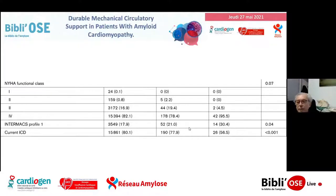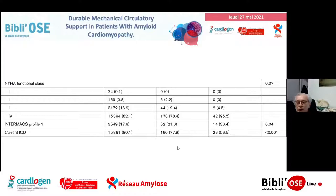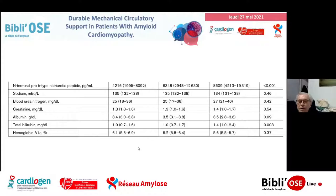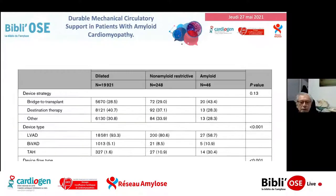Les patients étaient naturellement sévères. Il y avait un peu plus de profil INTERMACS 1 — en gros, du choc cardiogénique — en pourcentage dans les cardiopathies amyloïdes que dans les cardiomyopathies dilatées. Ils avaient beaucoup de DAI pour les deux premières catégories, beaucoup moins dans les cardiopathies amyloïdes. La fraction d'éjection était pratiquement normale dans les cardiopathies amyloïdes, et surtout le diamètre était normal versus ce qui est observé dans les cardiomyopathies. Le NT-proBNP était en moyenne plus élevé : 600 versus 4000.